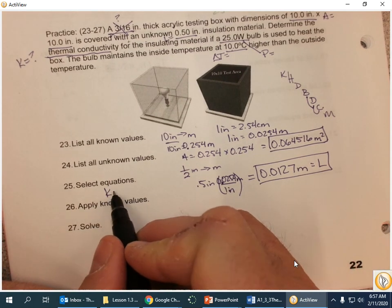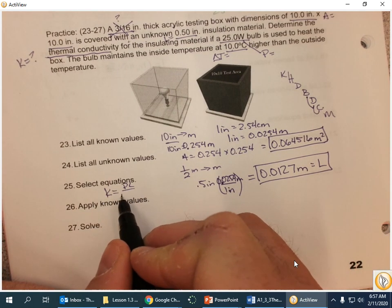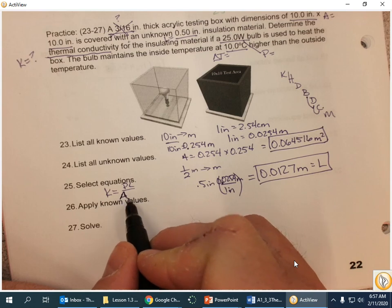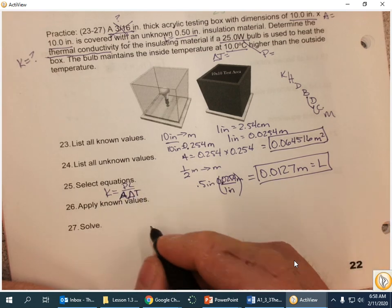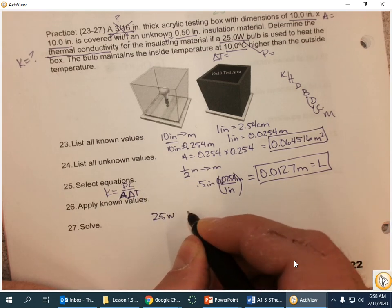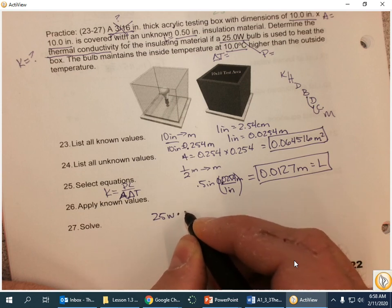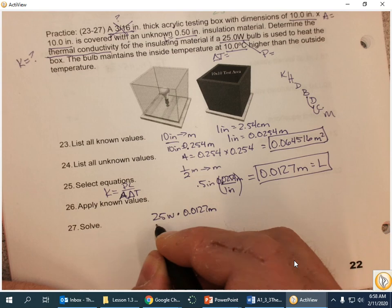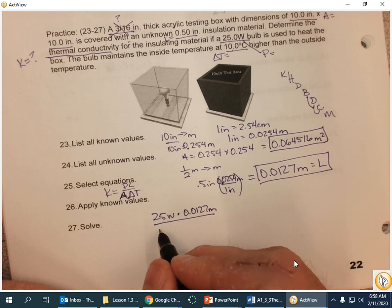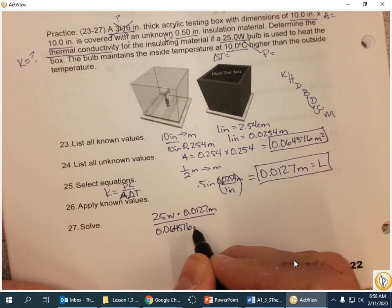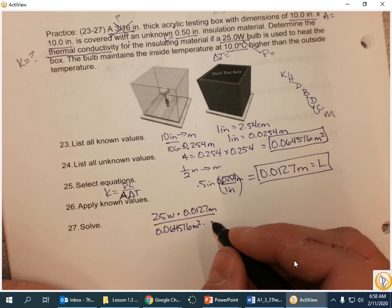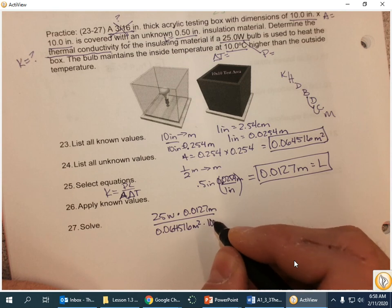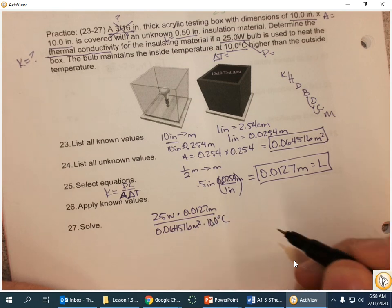Now all I have to do is take my formula. So, K equals PL over A delta T, and 25 watts times 0.0127 meters divided by 0.064516 meters squared times the difference in temperature, which is 10 degrees Celsius.